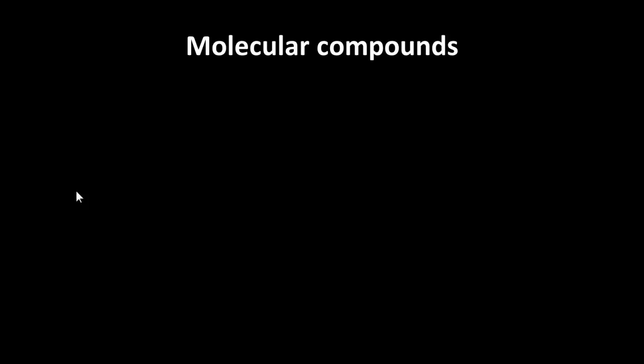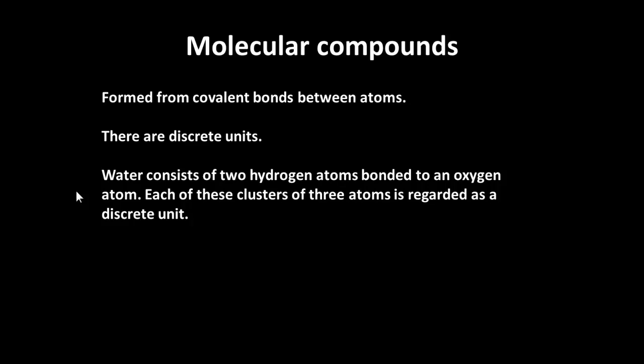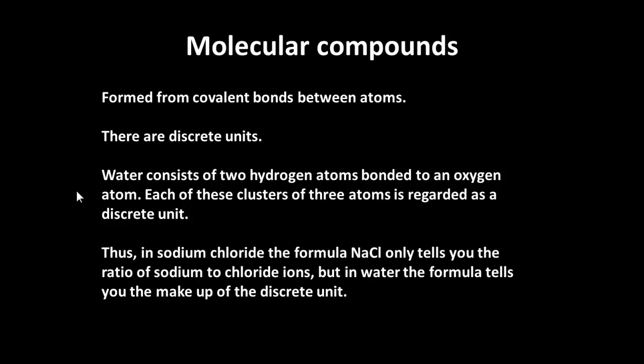Okay, so we must be able to say something about molecular compounds. They are covalent bonds. They're discrete units. Note that they are discrete units. So when two hydrogen atoms are bonded to an oxygen atom, you get a cluster of three atoms, and that's seen as a discrete unit.